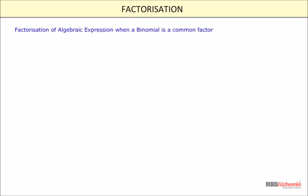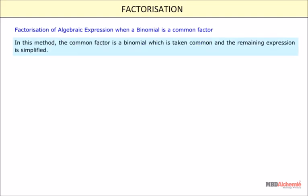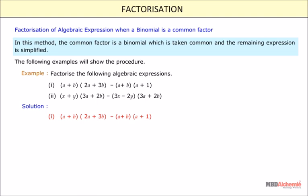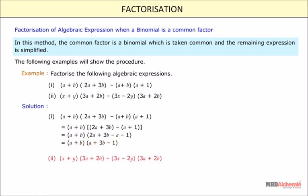Factorization of algebraic expression when a binomial is a common factor. In this method, the common factor is a binomial which is taken common and the remaining expression is simplified. For example, since a plus b is the common factor, taking a plus b common gives a plus b into a plus 3b minus 1. Similarly, x plus y into 3a plus 2b minus 3x minus 2y into 3a plus 2b, taking 3a plus 2b common, gives 3a plus 2b into minus 2x plus 3y.